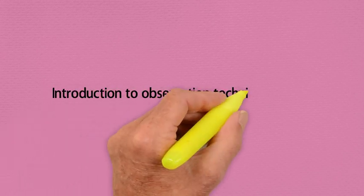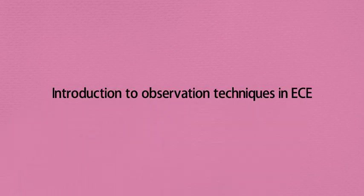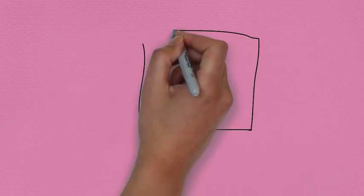Hi, today's video is going to introduce you to some beginning observation techniques which are used to understand children's play in early childhood education and its relationship to learning. We're going to cover five techniques in today's session.